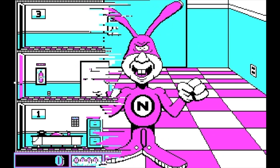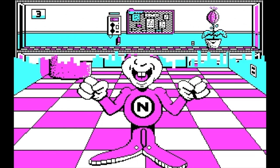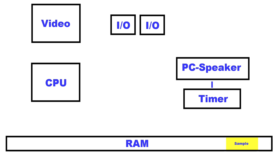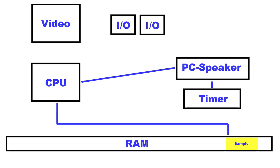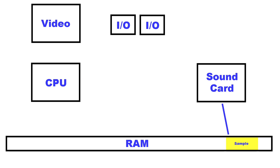Some games even managed to produce digital samples using the PC speaker, but since it is a 1-bit sound device, it doesn't sound that great. The real problem is that the CPU has to read every byte from RAM and precisely control every tick of the PC speaker, hogging up almost all of the CPU time for producing sound. A few years later, with cards like the Sound Blaster, it had something called DMA, which meant the CPU could give one instruction to the sound card telling it where the sample was in memory, and the sound card could handle reading and playing it on its own while the CPU went back to its own tasks.